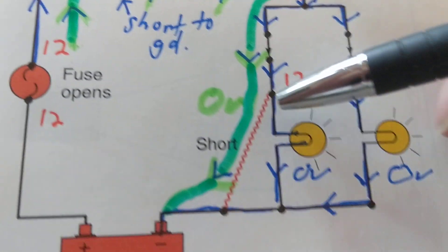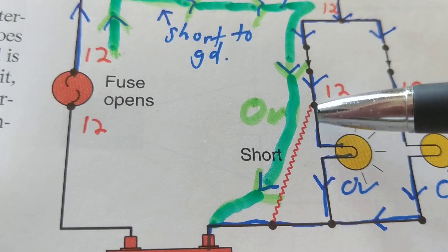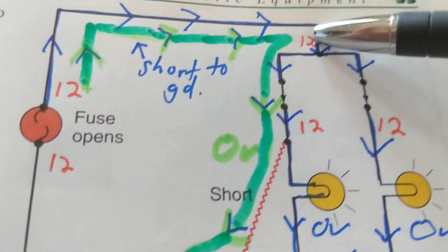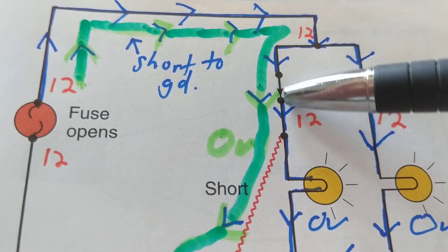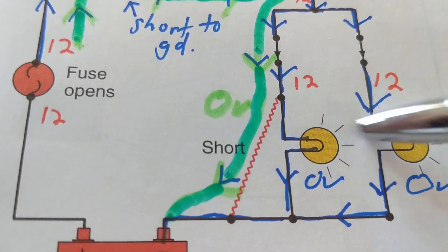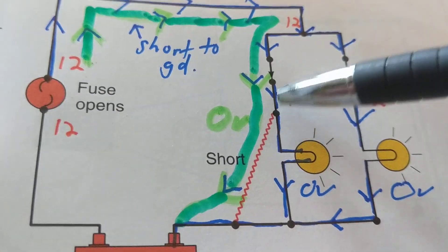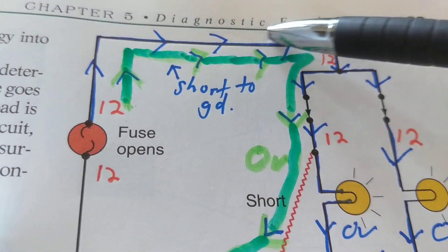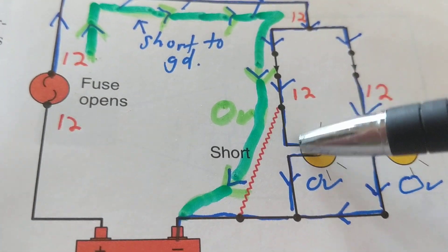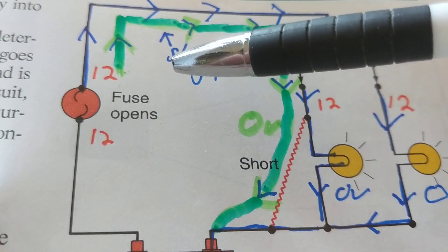A direct short to ground means zero ohms — the path of least resistance. Current flows from the battery, reaches the junction, and instead of going through either light bulb, it takes the short. Zero ohms compared to whatever the bulbs are — 10 ohms, 5 ohms, 3 ohms — is much less. So both bulbs are completely bypassed. Following the green path, current goes through the short directly to ground and never enters either light bulb.